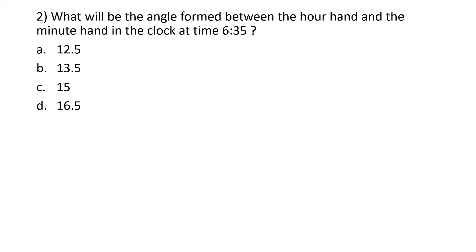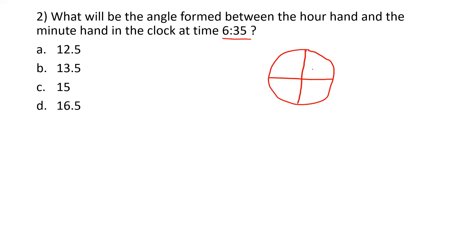The next question asks: what will be the angle formed between the hour hand and the minute hand in a clock at time 6:35? We know how a clock looks. The clock has positions 12, 1, 2, 3, 4, 5, 6, 7, 8, 9, 10, 11. They're asking what would be the angle between the hour and minute hand.